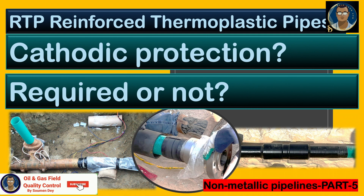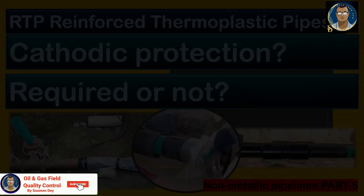RTP is a non-metallic pipeline. So do we need cathodic protection because the connectors are metallic? Let us discuss where it is required or it is not at all required.